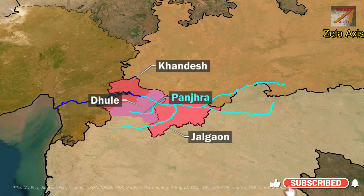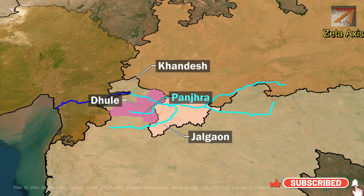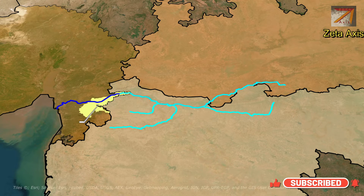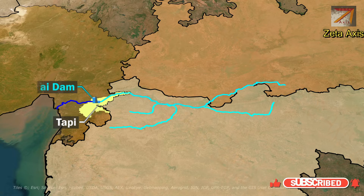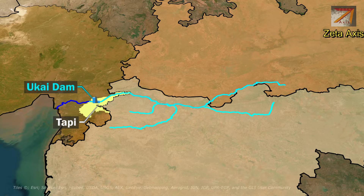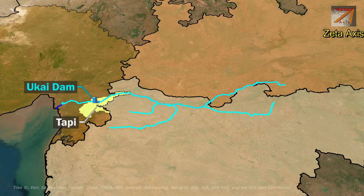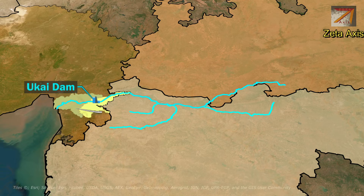The Taapti River enters Gujarat in Taapti district, where Ukai Dam is built on the Taapti River. Finally, the Taapti River flows into the Arabian Sea at Surat.